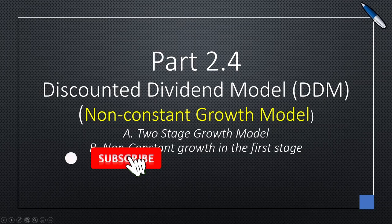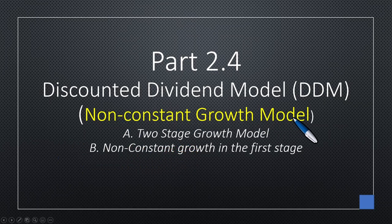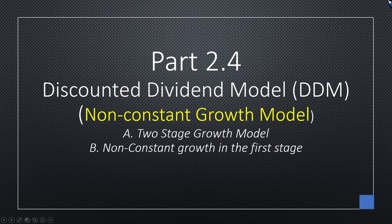Click some of the cards that are showing up here. In the first part of the non-constant growth model, we looked at the two-stage growth model. If you have not watched that, kindly click on this card up here. In this part, which is the B part, we are going to look at the non-constant growth in the first stage, where the dividend growth rates are not the same.